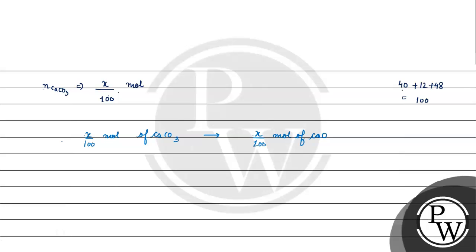यह हमारे पास moles of calcium oxide हैं। Mass of calcium oxide क्या होगा? हमें पता है: moles × molar mass = mass। Number of moles = x/100, और molar mass of CaO = 40 + 16 = 56 gram per mole। So mass of calcium oxide = (56/100)x = 0.56x grams।